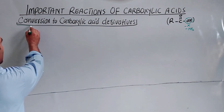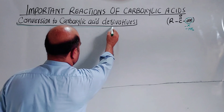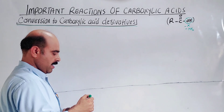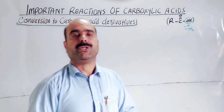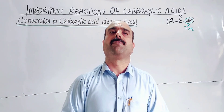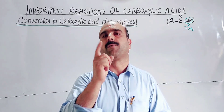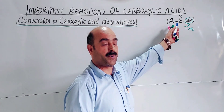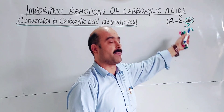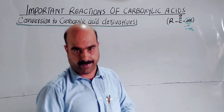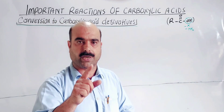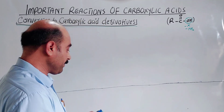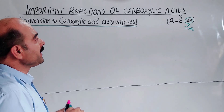The carboxylic acid is converted into its derivatives. When the OH group is replaced, a new derivative is formed. The preparation of these carboxylic acid derivatives will be discussed, including the reactants used and the products formed in each reaction.